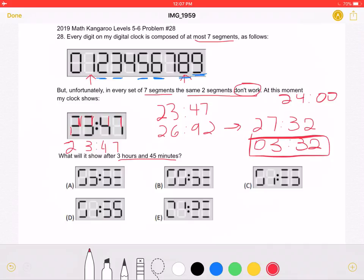Keeping in mind which segments don't work, we can look at the answer choices. Answer choice A, if we fill in the segments that don't work, and then erase any unnecessary ones,